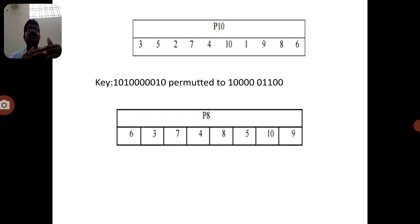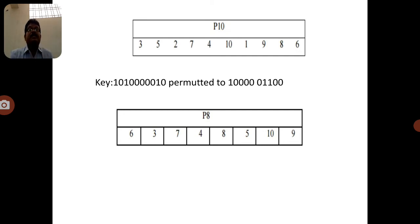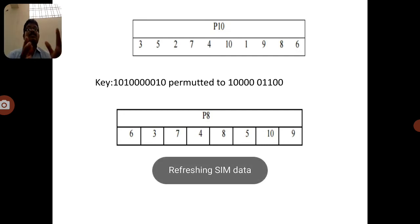The key is converted using P10, which is the permutation order: 3, 5, 2, 7, 4, 10, 9, 8, 6. The positions change but the elements themselves are not changed — this is the transposition concept, where we rearrange the order of the given plain text. This is P10.